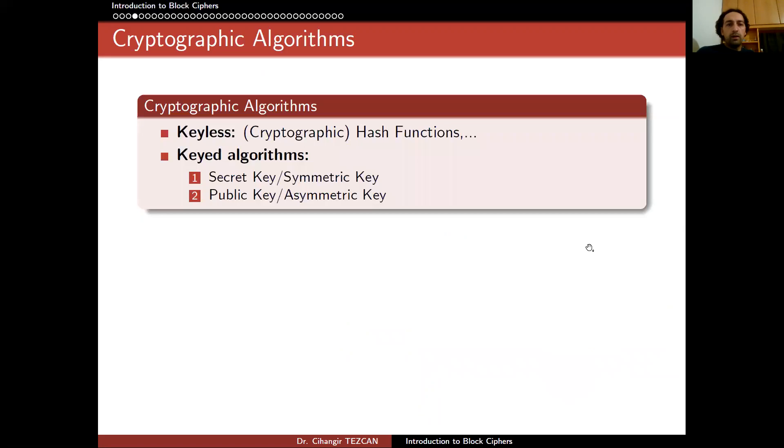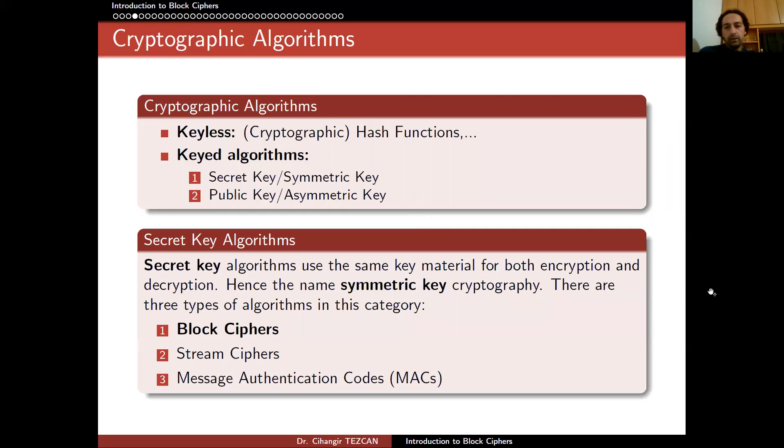So let's try to classify cryptographic algorithms. We can actually, this is not an easy job. But let's say that we can divide cryptographic algorithms into two as keyless algorithms like cryptographic hash functions. These algorithms do not use a secret key. But we also have keyed algorithms like secret key and public key cryptography. These are also known as symmetric key cryptography and asymmetric key cryptography. Today's topic will be on the symmetric key cryptography. In other words, secret key cryptography.